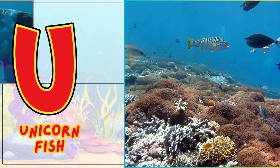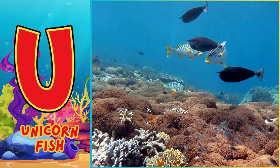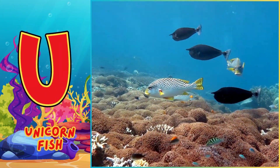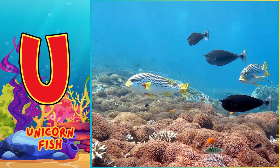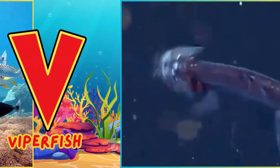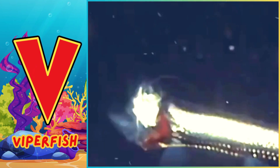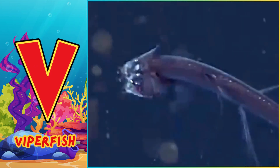U is for unicorn fish. A, unicorn fish. V is for viper fish. V, viper fish.